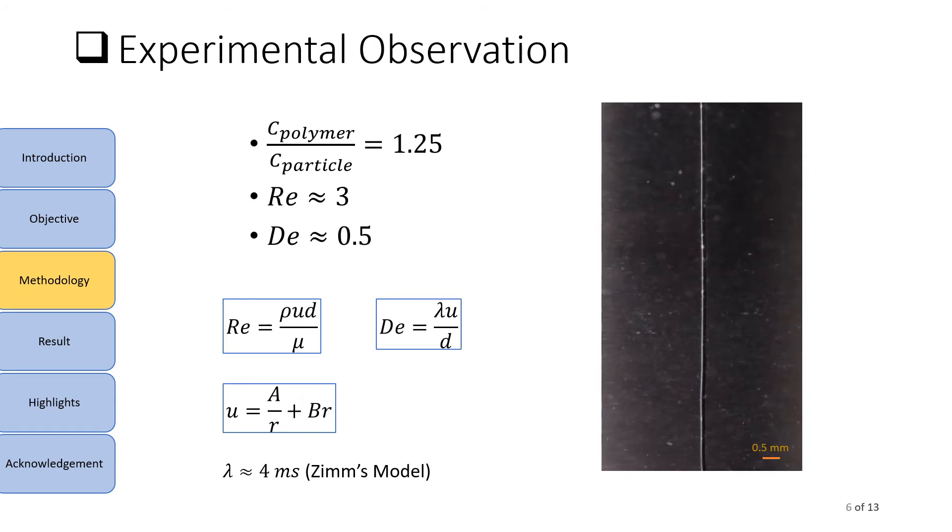Here, I am going to show experimental observation for a particular data point when concentration ratio is 1.25 and rod is rotating at 200 rpm, which corresponds to a Reynolds number of around 3 and Deborah number of around 0.5. Reynolds number is calculated based on needle diameter as shown in this expression. Here, ρ is the density of the fluid, u is the azimuthal velocity of fluid at the radial location where needle is located, d is the needle diameter, and μ is the dynamic viscosity of the experimental fluid.